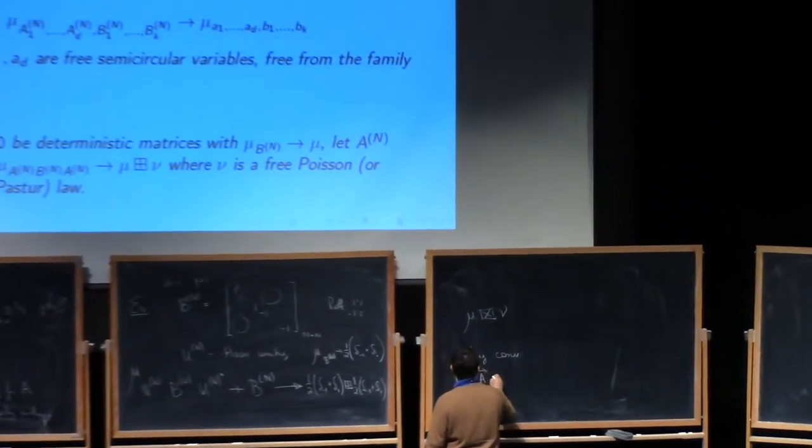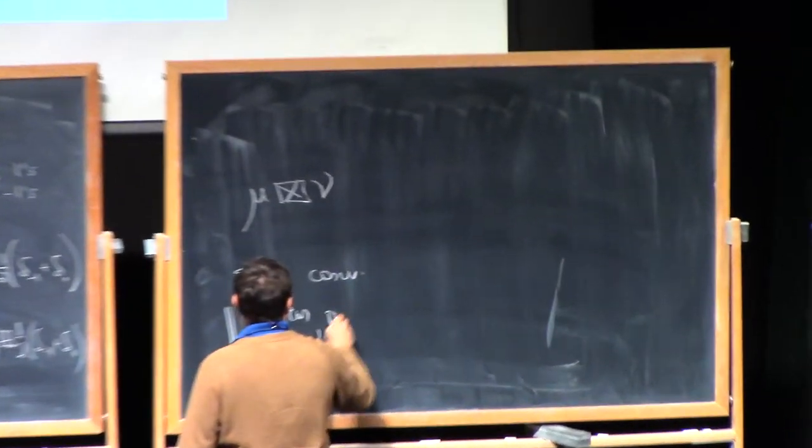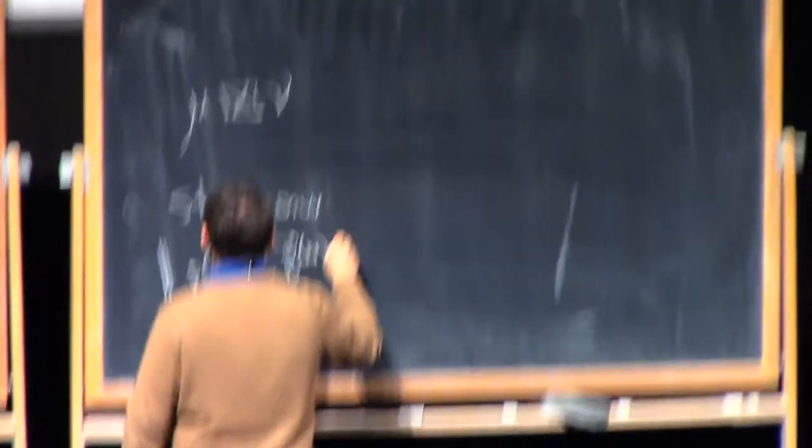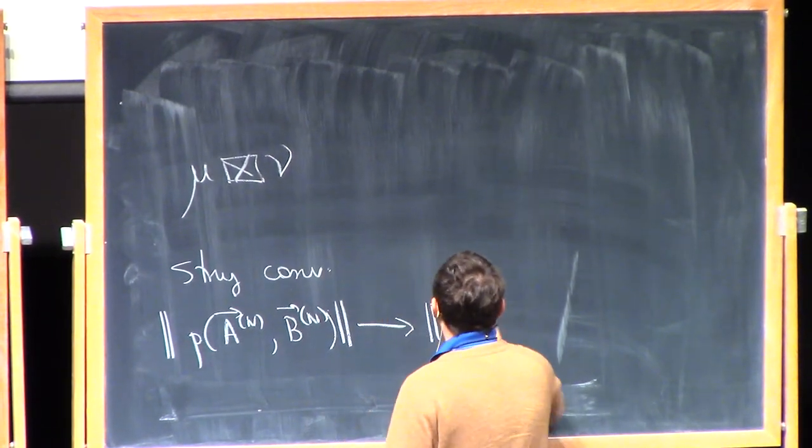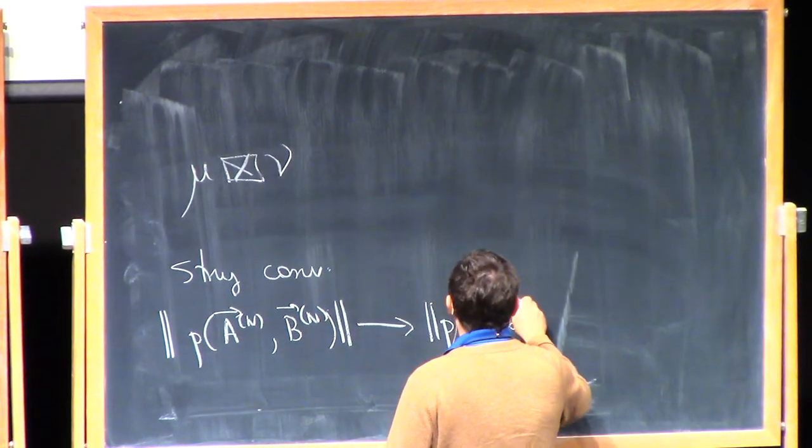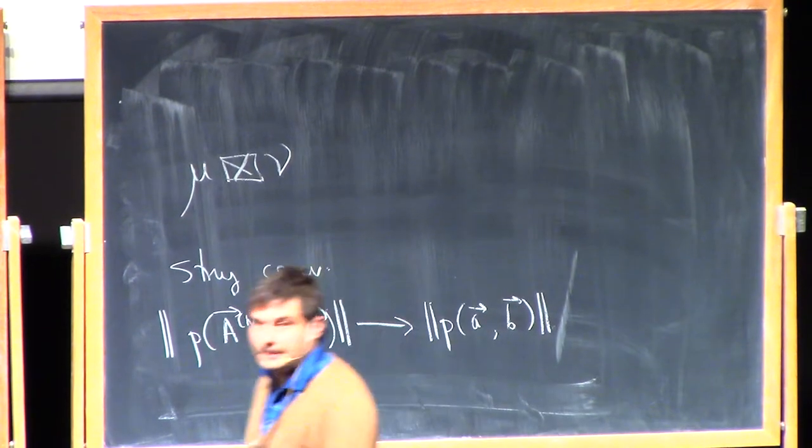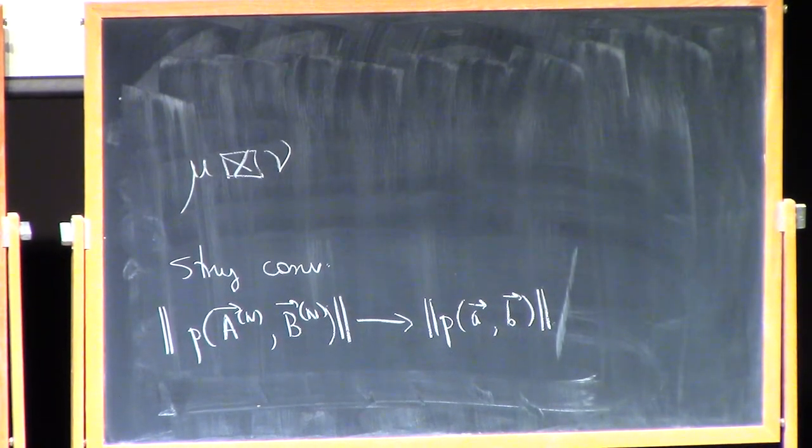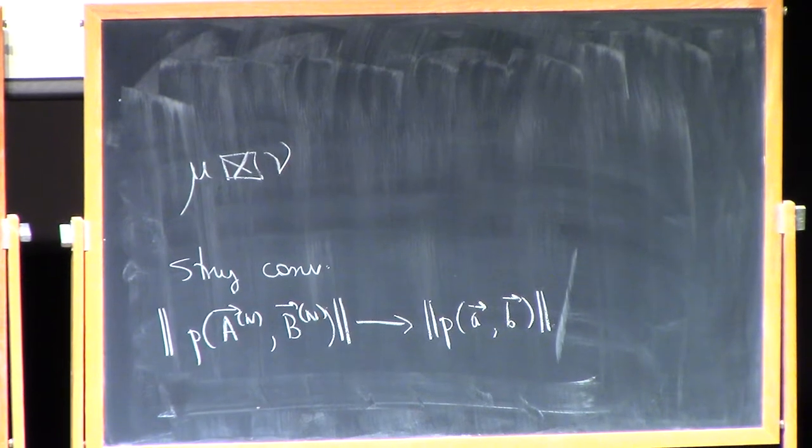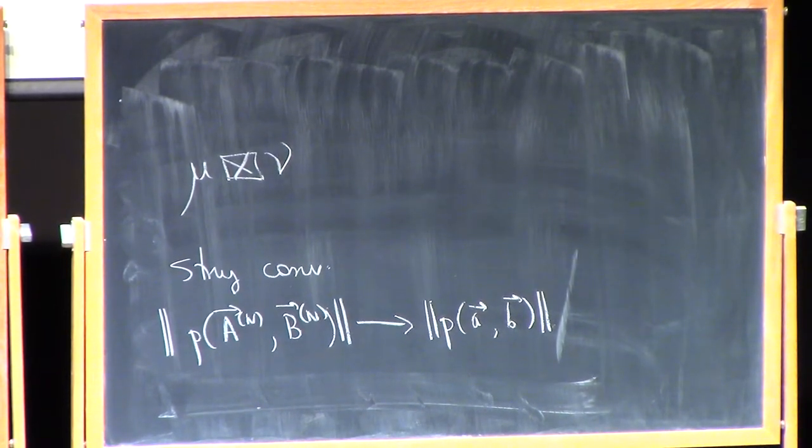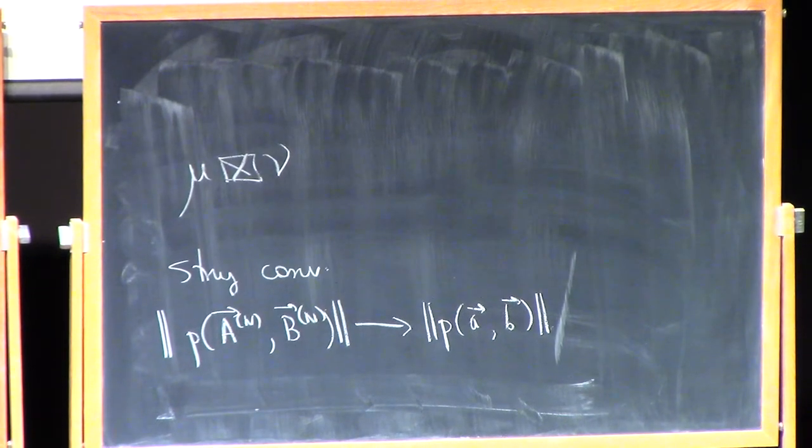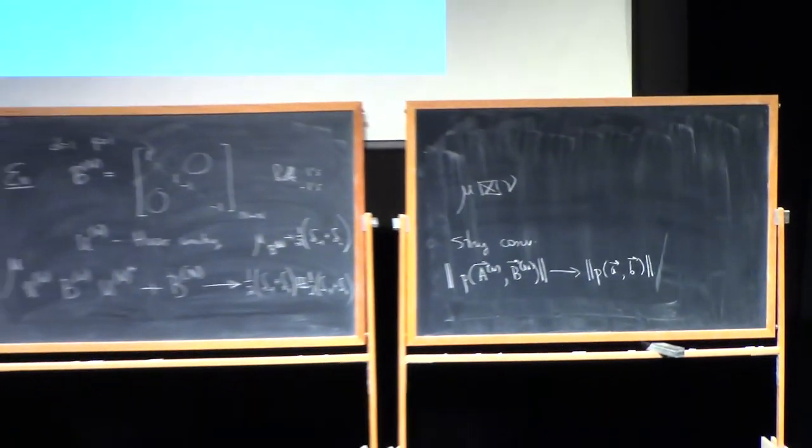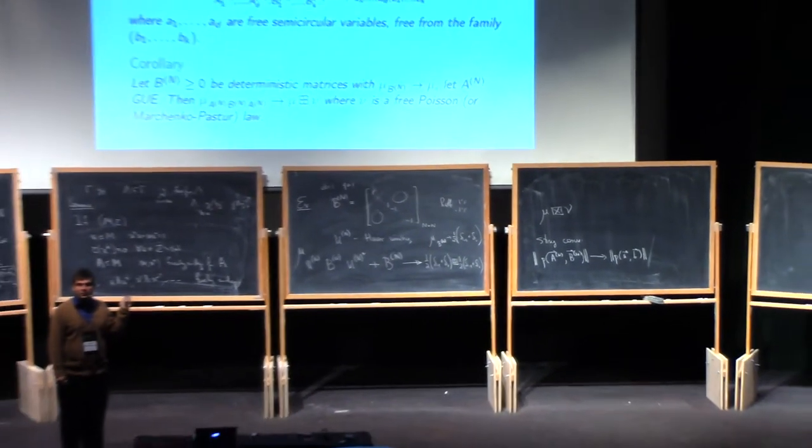And so what this means here is that if you take a polynomial in these matrices, A_1N, B_N, then the operator norm of this will converge to the corresponding polynomial in your A's and B's. So that tells you, for instance, that the largest and smallest eigenvalues behave the right way, and various other things as well. Any questions about this?